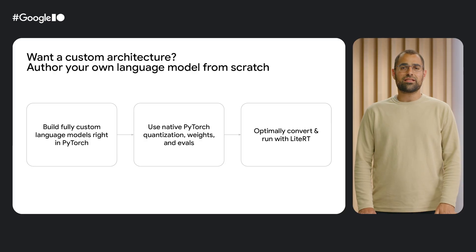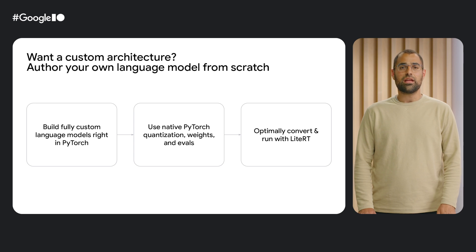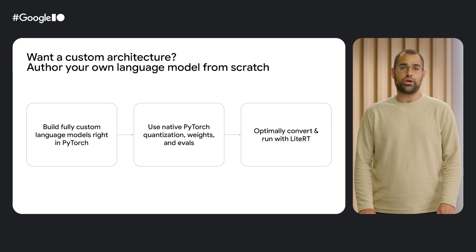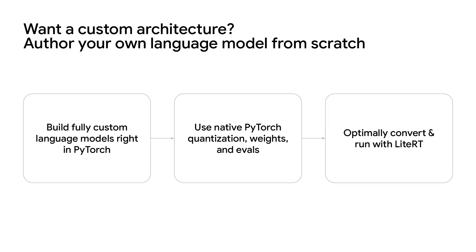Everything discussed so far has been around customization through weights or quantization. If you want to make architectural changes to a model, or even bring a net new language model to the edge, you can use our AI Edge Torch Generative API. With the AI Edge Torch Generative API, you build the language model architecture using a combination of PyTorch native layers and AI Edge Torch layers optimized for edge inference. Then you attach the model weights and convert it to run with LiteRT.